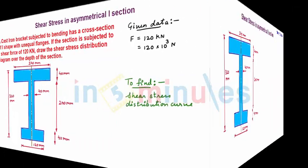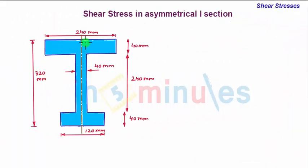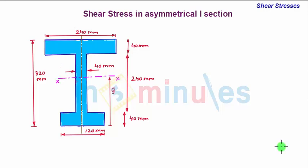The eye section is asymmetrical about the horizontal axis. Our first step will be to determine the centroidal XX axis of the eye section, which will also be the neutral axis. We represent the centroidal XX axis of this asymmetrical eye section at a distance y-bar from the bottom-most part.